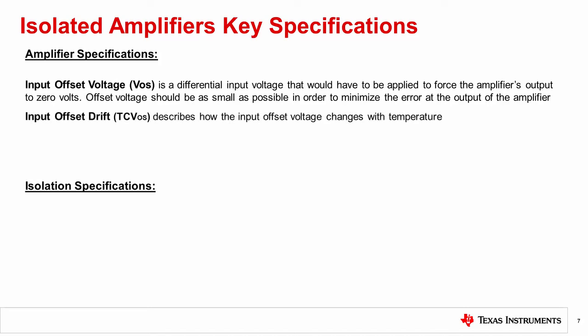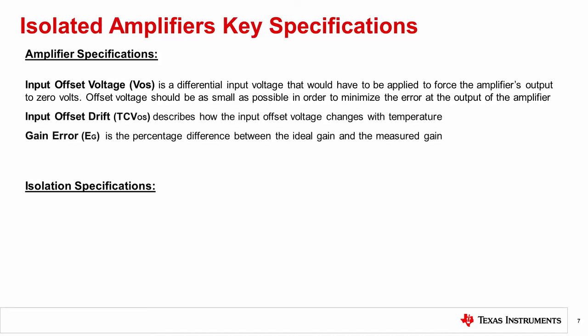Next is gain error, which is the percentage difference between the ideal gain and the measured gain. To describe the changes in gain over temperature, the gain error drift parameter is used.